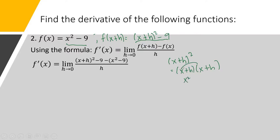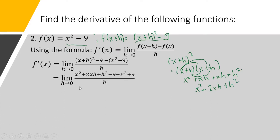So ang gagawin po natin dito is the square of the binomial kasi exponent niya ay 2, and x plus h is a binomial. We're going to use the FOIL method, so magiging x squared, then xh, then xh, then h squared. Combining like terms, since dalawang xh, magiging 2xh. Bakit negative x squared plus 9? Kasi yung minus sa labas yung common factor natin, minultiply sa x squared, magiging minus x squared. Tapos yung negative 9 sa loob magiging positive, dahil negative times negative magiging plus.